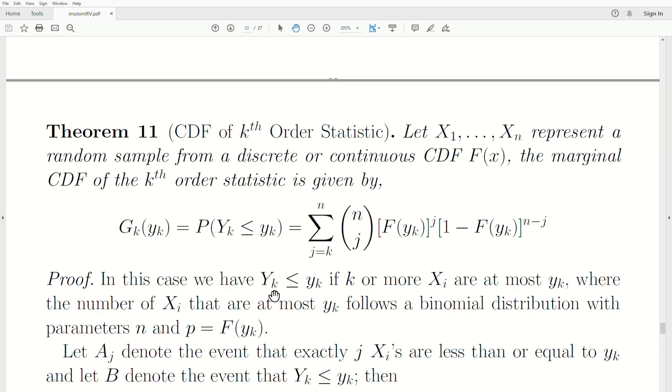In this case, we have that the kth order statistic is less than or equal to some value. I could call that x or y or z, but we call it little yk just to emphasize that we're talking about the kth order statistic. This is a random variable, and this is a value, a particular value. Now how can the kth order statistic be less than a value? That means we collect the sample, and at least k of the values are less than that value. Then the kth order statistic is less than that. If only k minus one of the values in our sample are less than or equal to this, then the kth order statistic can't be less than that. If all n observations in our sample are less than yk, then of course the kth observation is less than that.